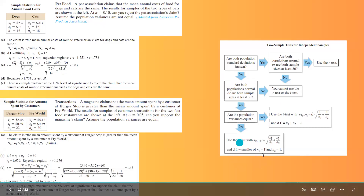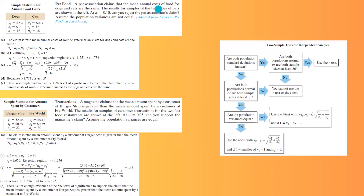Since the claim says the means are equal, the null hypothesis is the claim: mu1 equals mu2. The alternative hypothesis is mu1 is not equal to mu2. Since the population variances are not equal, the degrees of freedom is the smaller of n1 minus 1 and n2 minus 1.